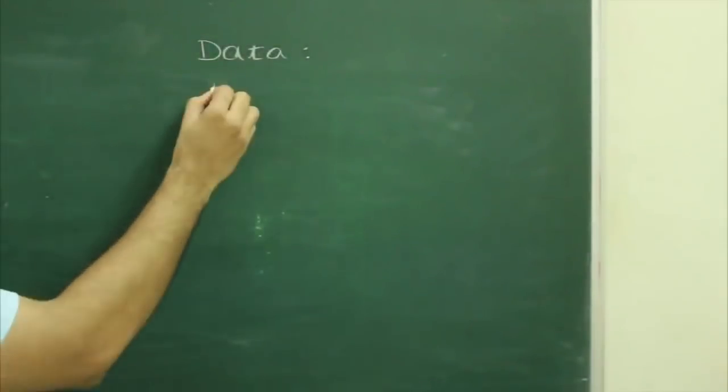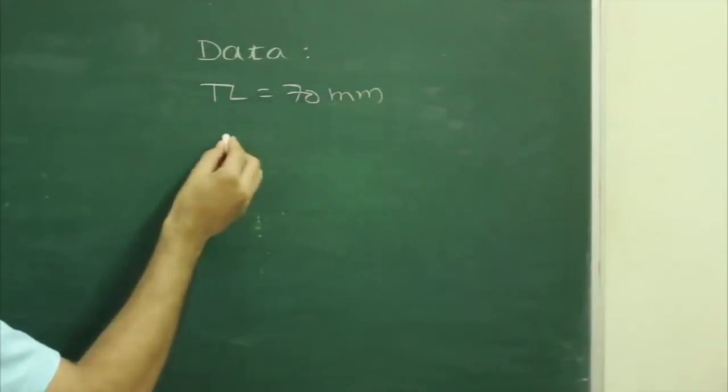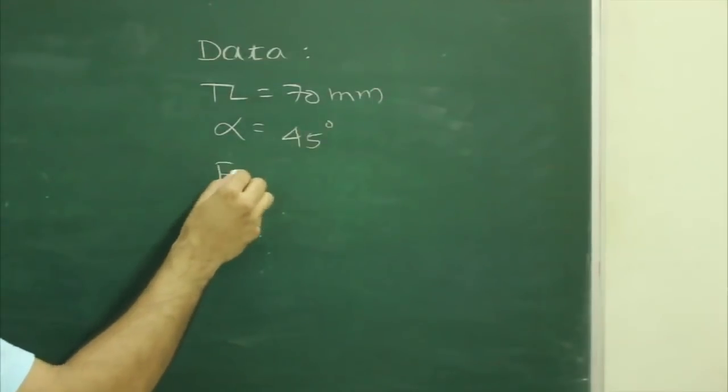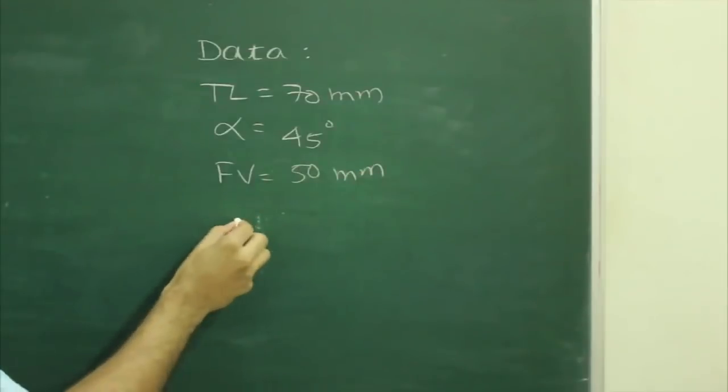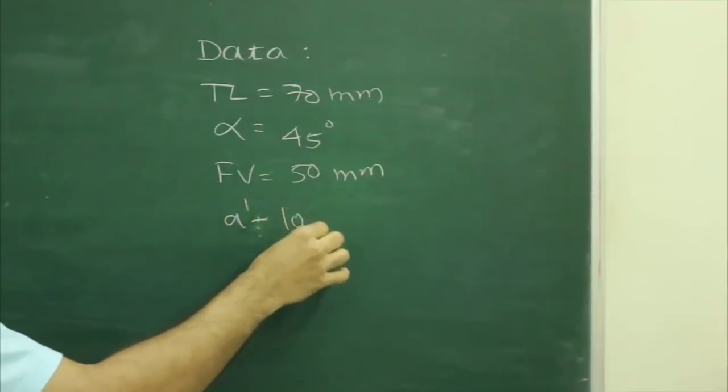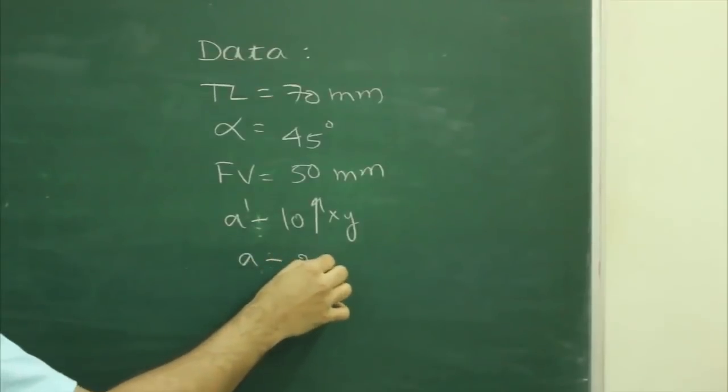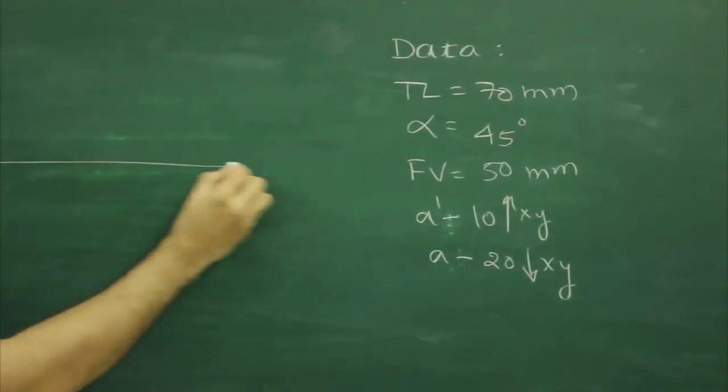So first we will write given data: true length 70 mm, alpha 45 degrees, front view 50 mm, point A 10 mm above XY line, point A 20 mm below XY line. Draw XY line.